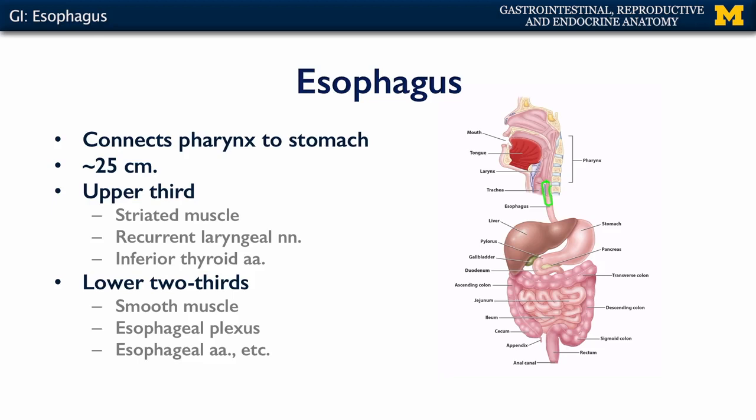This upper third is innervated by the recurrent laryngeal nerves, which are branches of the vagus nerve, and it is supplied with blood by the inferior thyroid arteries.